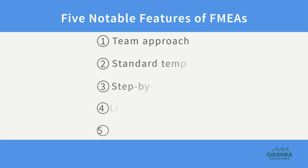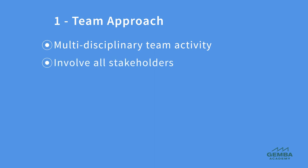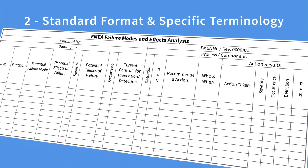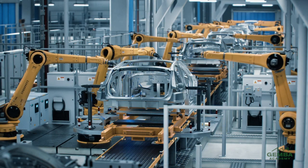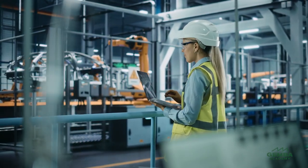There are five notable features of FMEAs. First, it's essential to perform Failure Modes and Effects Analysis as a team activity. This ensures that we capture as many possible risks as we can, involve stakeholders and interface with technical experts, and build consensus on the actions we will implement to reduce risk. Second, FMEA uses a standard format and specific terminology. While these are not difficult to learn, it's important to be familiar with them. Also, some industries, such as the automotive industry, specify an exact format and standard to follow for doing FMEAs.